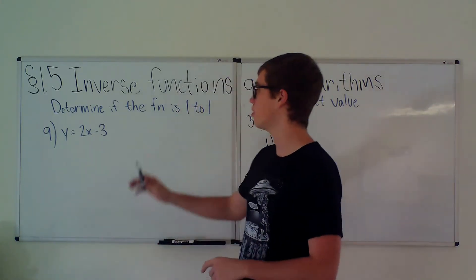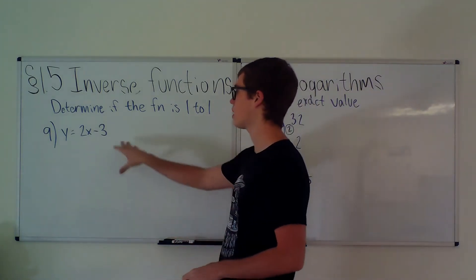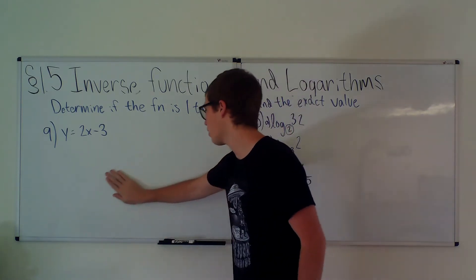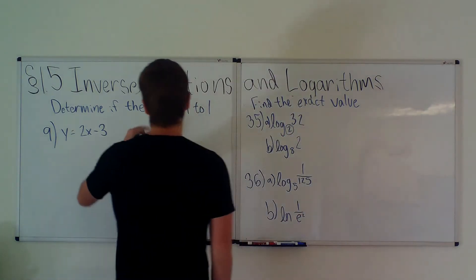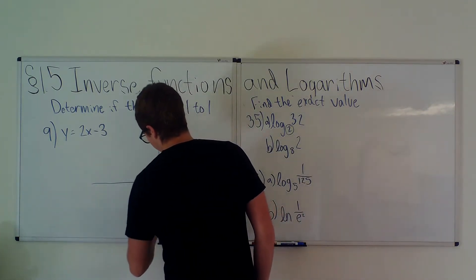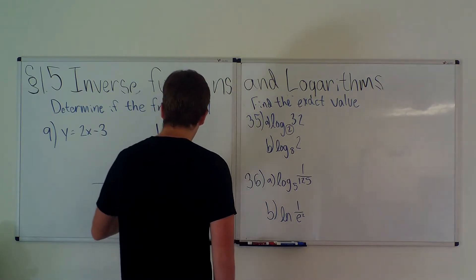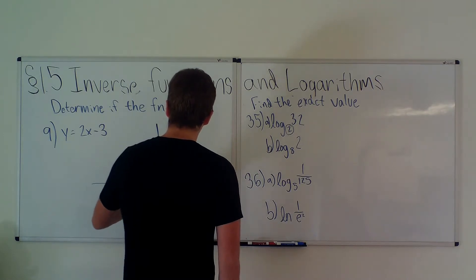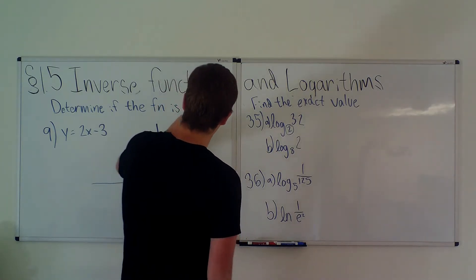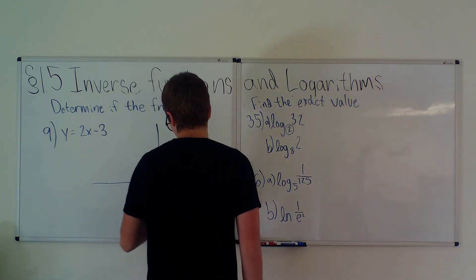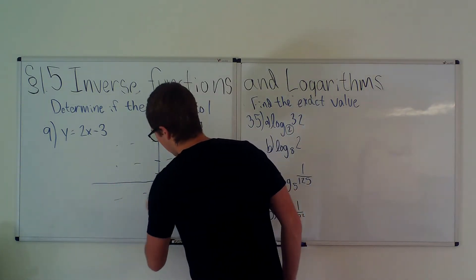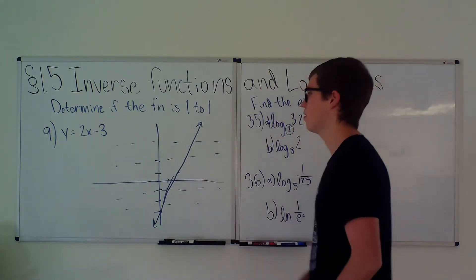Now onto the questions — we're doing problems 9, 35, and 36. Problem 9: determine if the function is one-to-one. The easiest way is to draw a graph and do the horizontal line test. We set up our x-y coordinate system — the function hits the y-axis at negative 3 with slope rise 2 run 1.